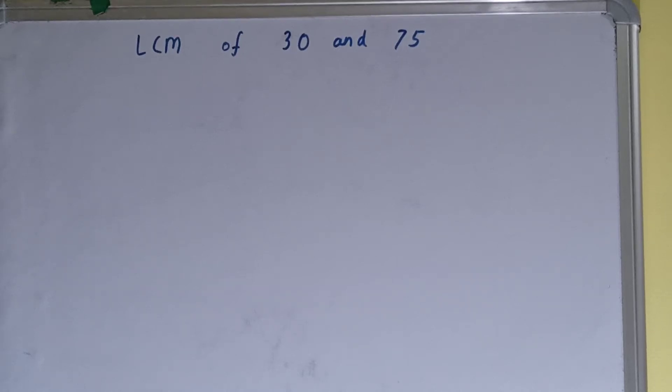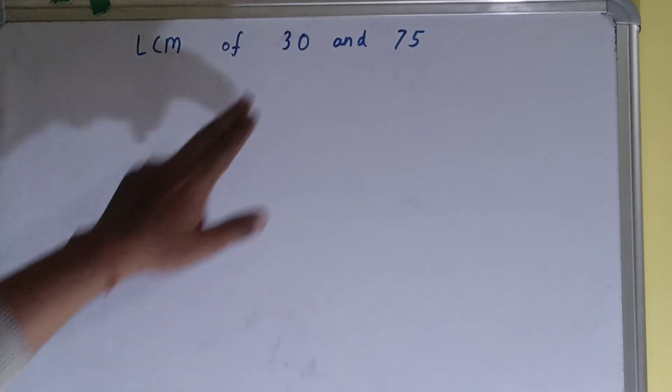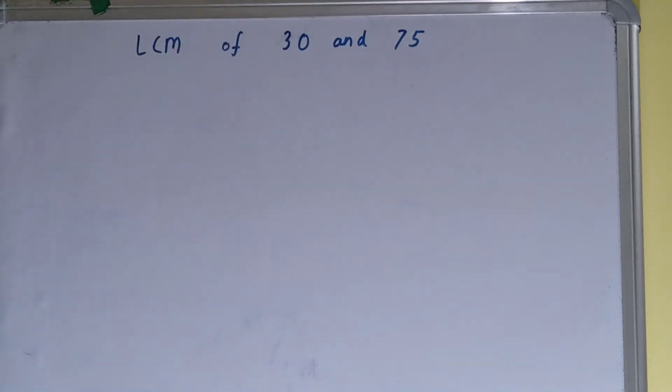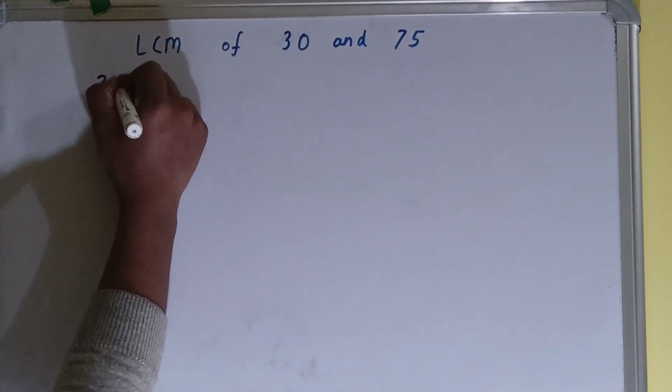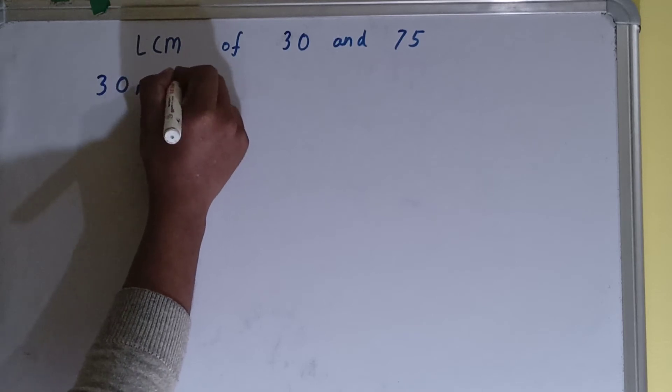Hello friends, in this video I'll be helping you with the LCM of 30 and 75. To find it out, we first need to write both the numbers like this: 30, 75.